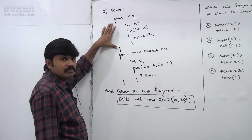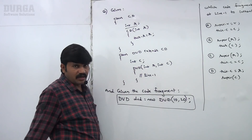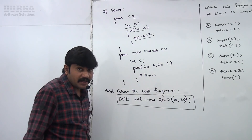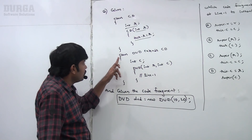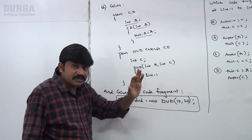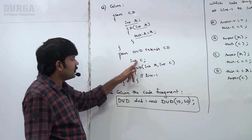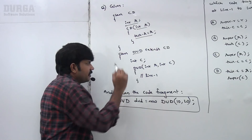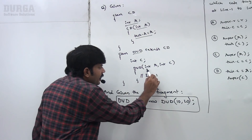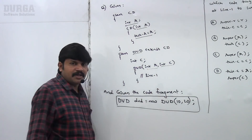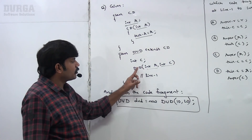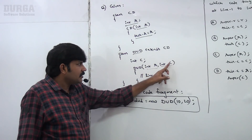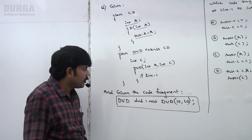CD is a class which contains one instance variable int R. This constructor is responsible to perform initialization for that instance variable. Next, class DVD extends CD — I am creating a child class for CD. The name of the child class is DVD, with its own instance variable int C. The constructor DVD(int R, int C) is responsible to perform initialization. R is coming from the parent, and C is DVD's own instance variable — that's line 1.